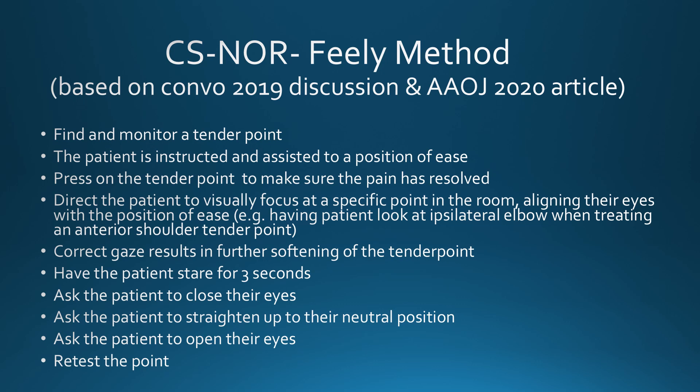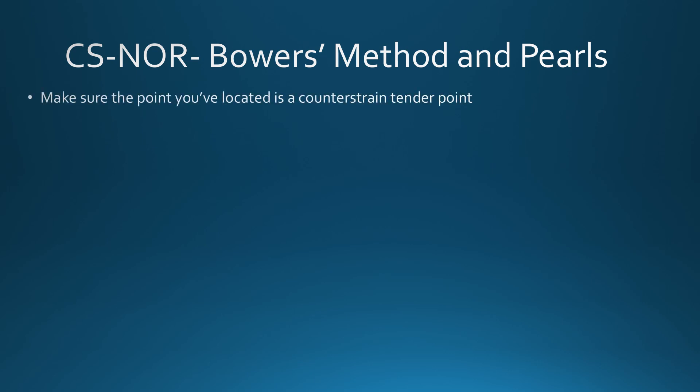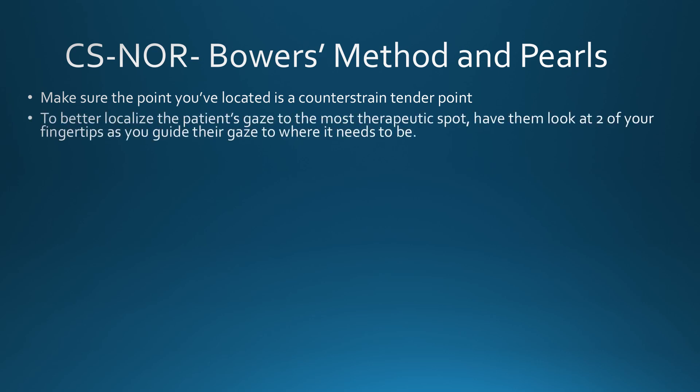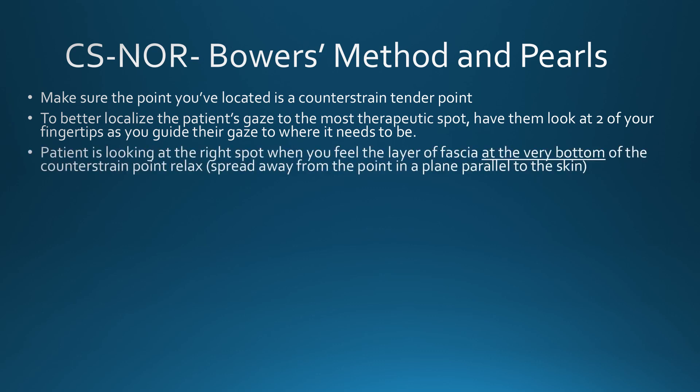The tender point is again palpated with the goal of complete resolution of pain. Now, my observations regarding combining neuroocular release with strain counterstrain. First, find a counterstrain tender point, making sure the point you've located is actually a counterstrain point and not some other type of point that hurts when pushed on. Use two fingertips on your other hand and ask the patient to follow those fingertips with their eyes without moving their head. You will know they are looking at the correct spot when you feel the layer of fascia at the very bottom of the tender point relax — it will spread away from the point in a plane parallel to the skin. A big thank you to Dr. Alex Atkinson for bringing this to my attention when he was a student.